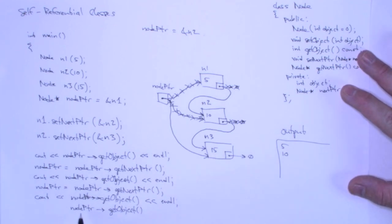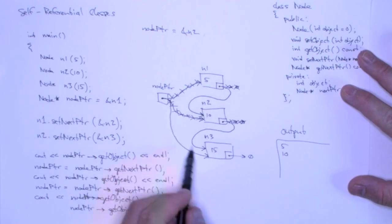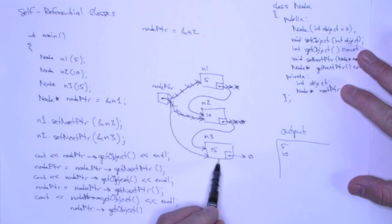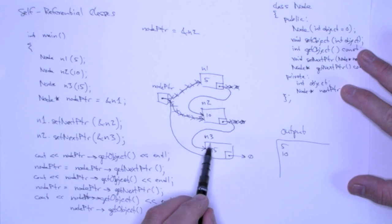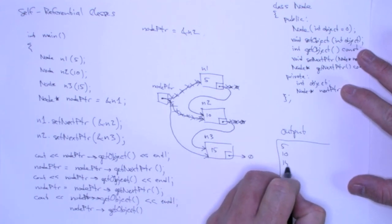Now I can say cout node pointer get object. That is going to call the get object method of the object that node pointer points to. Node pointer points to this object n3. It's going to call this object's get object method, or this node's get object method. I mean nodes are objects, and so are the integers contained therein. And that will return 15, and that's what will be printed. So there's the output.